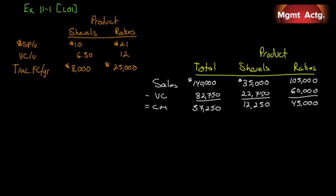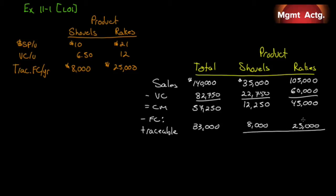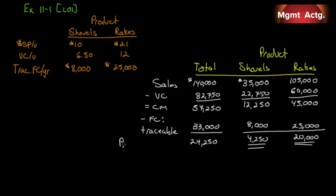That's where the similarity to a standard income statement ends. Now we subtract fixed costs, but we subtract traceable fixed costs first. For rakes, traceable fixed costs are $25,000; for shovels, $8,000. Total traceable costs are $33,000. That gives us a segment operating profit of $20,000 for rakes and $4,250 for shovels, totaling $24,250. Since we're dividing segments by product, we call this a product segment margin.